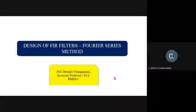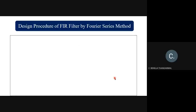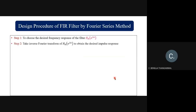Hi students, today we are going to see the design of FIR filter by Fourier series method. The design procedure has multiple steps. Step one is to choose the desired frequency response of the filter, Hd of e^(jω). Sometimes they might give Hd of e^(jω) in the problem statement, or sometimes they may give only the type of filter and we have to take the desired frequency response.